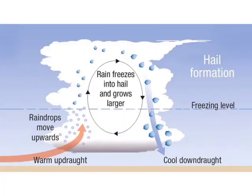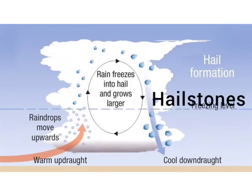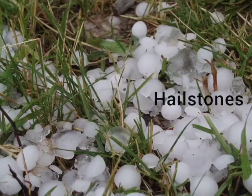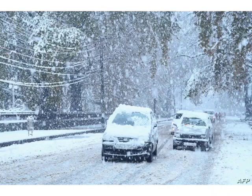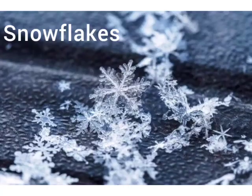Sometimes on their way down, raindrops pass through very cold air and freeze to form small balls of ice. These fall to the ground as hailstones. If the clouds themselves are very cold, the water vapour condenses and freezes to form ice instead of water. The ice so formed is in the form of soft, beautiful snowflakes. They have different shapes.